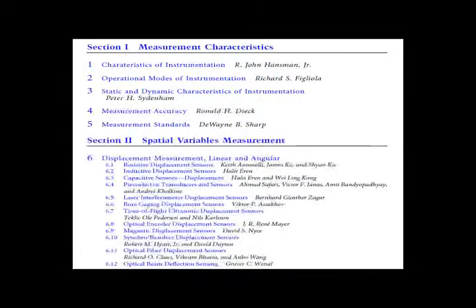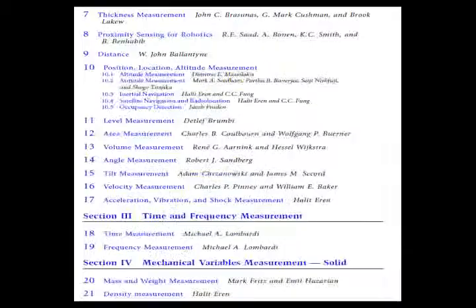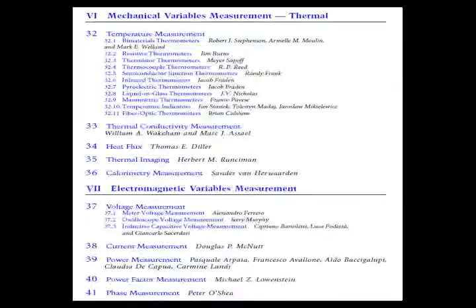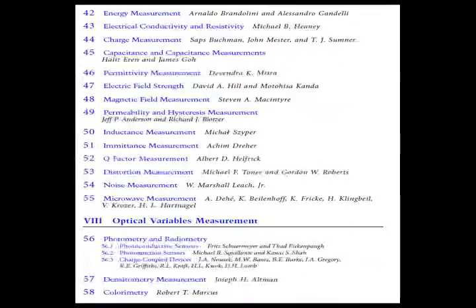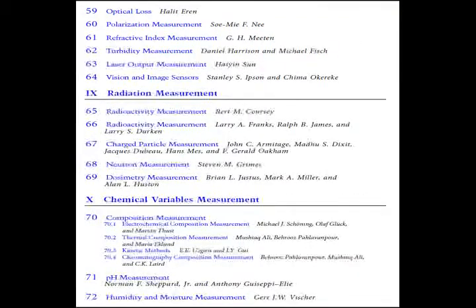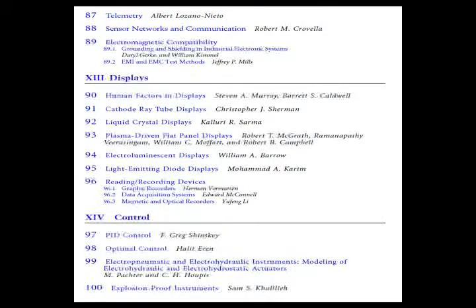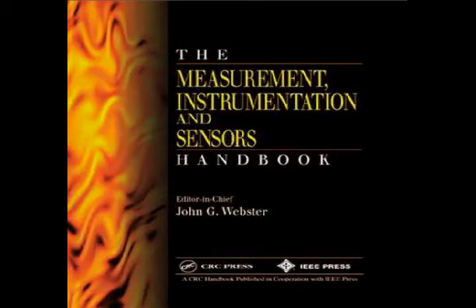This book covers topics like measurement characteristics, spatial variables measurement, time and frequency measurement, mechanical variables measurement, electromagnetic variables measurement, optical variables measurement, RF measurement, chemical variables measurement, biomedical variables measurement, signal processing, displays and controls. This book is written by the best authors in the field of measurement and instrumentation.